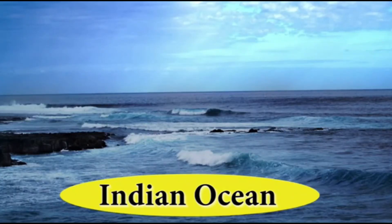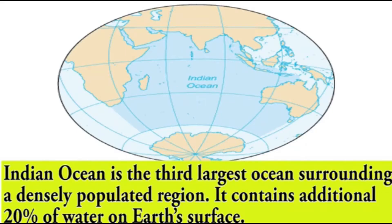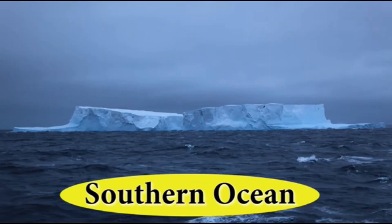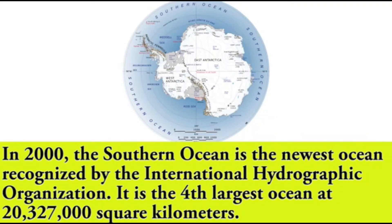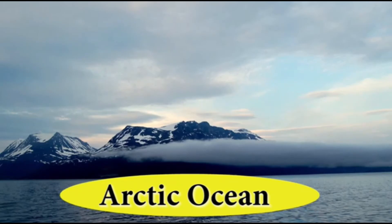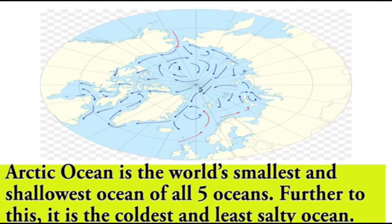The Indian Ocean is the third largest ocean, surrounding a dense equatorial region, and contains about 20 percent of the water on Earth's surface. The Southern Ocean is the newest ocean, recognized by the International Hydrographic Organization in 2000. It is the fourth largest ocean at 20 million 327 thousand square kilometers. The Arctic Ocean is the world's smallest and shallowest of the five oceans, and is also the coldest and least salty ocean.